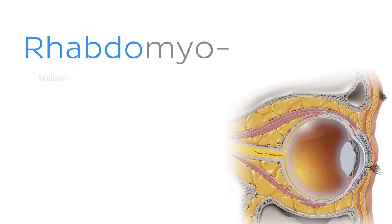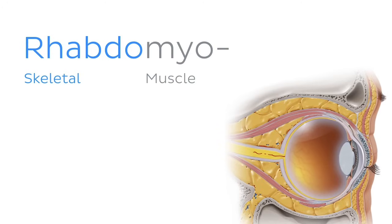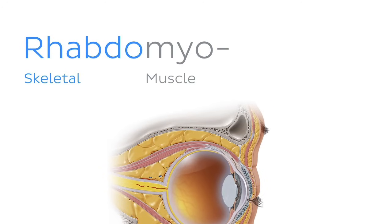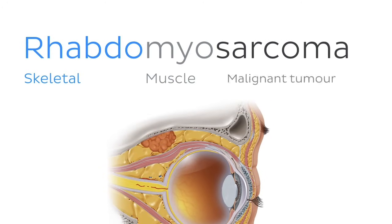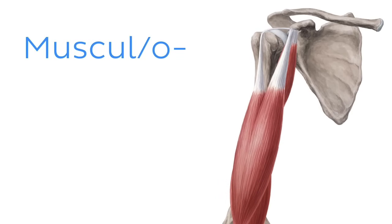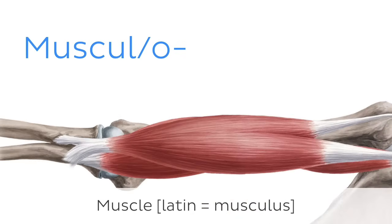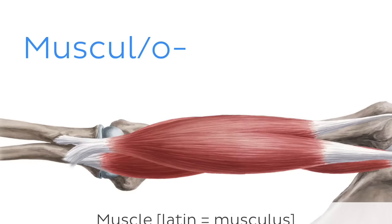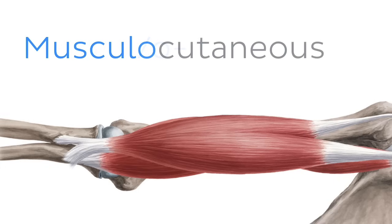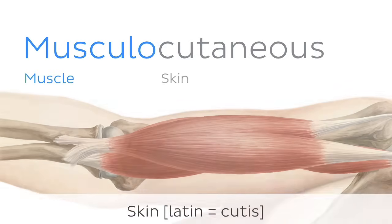Rhabdomyo refers to skeletal or striated muscle, such as rhabdomyosarcoma, which is a malignant tumor of skeletal muscle. Of course, we can't forget musculo, which comes from Latin and is where we get the term muscle. An easy example of this prefix is musculocutaneous, which means relating to both muscle and skin.